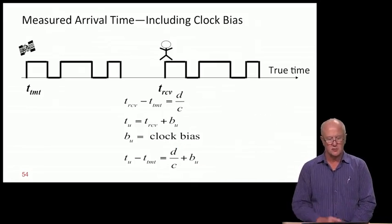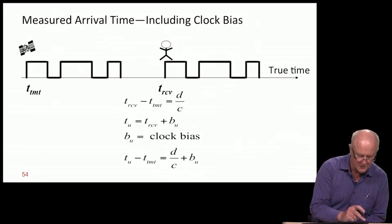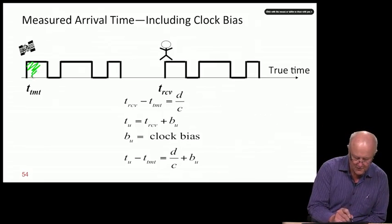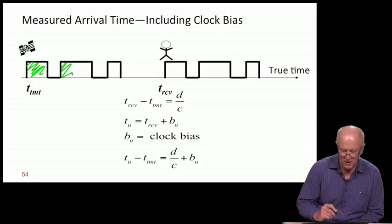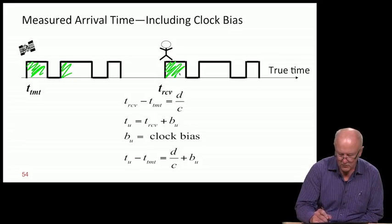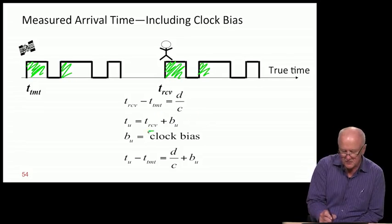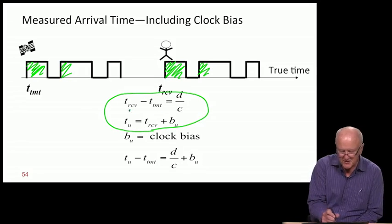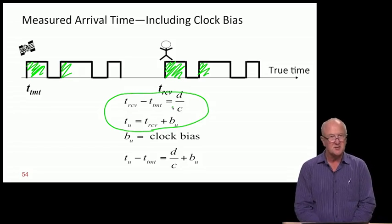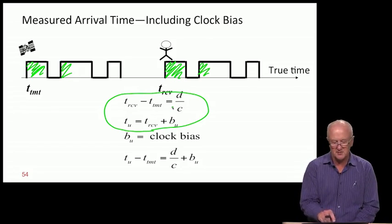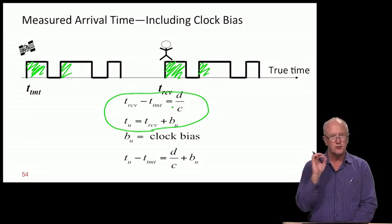Let's go back to our equations. We have the code being broadcast by the satellite, received by the user. We've embellished our equations. The one at the top still assumes both measurements, received and transmitted, are made in GPS time, a common agreed time.